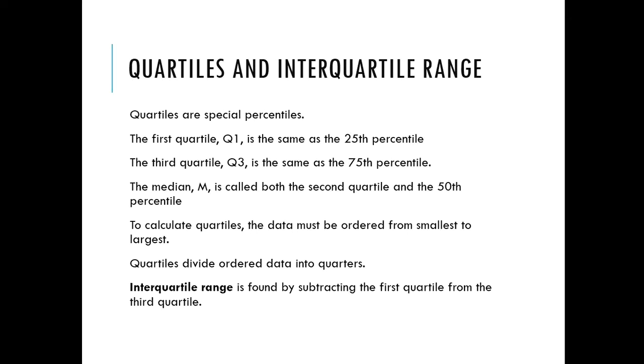Your interquartile range is found by subtracting the first quartile from the third quartile. So what that represents is 50% of your data in the middle.